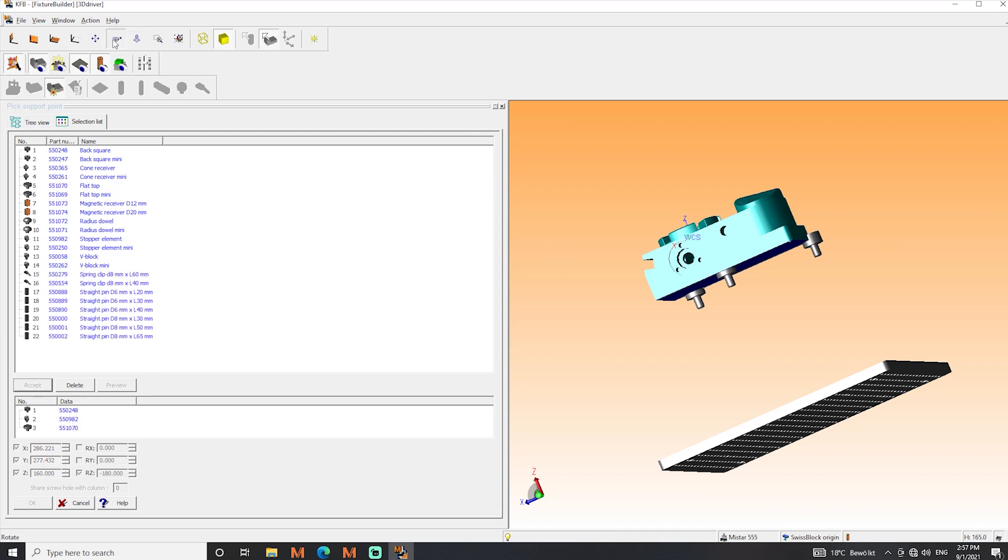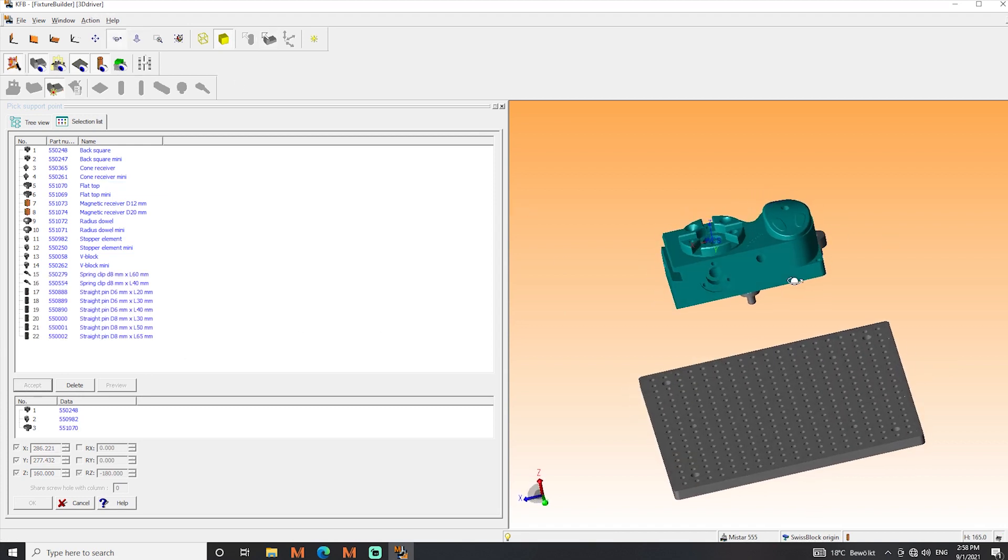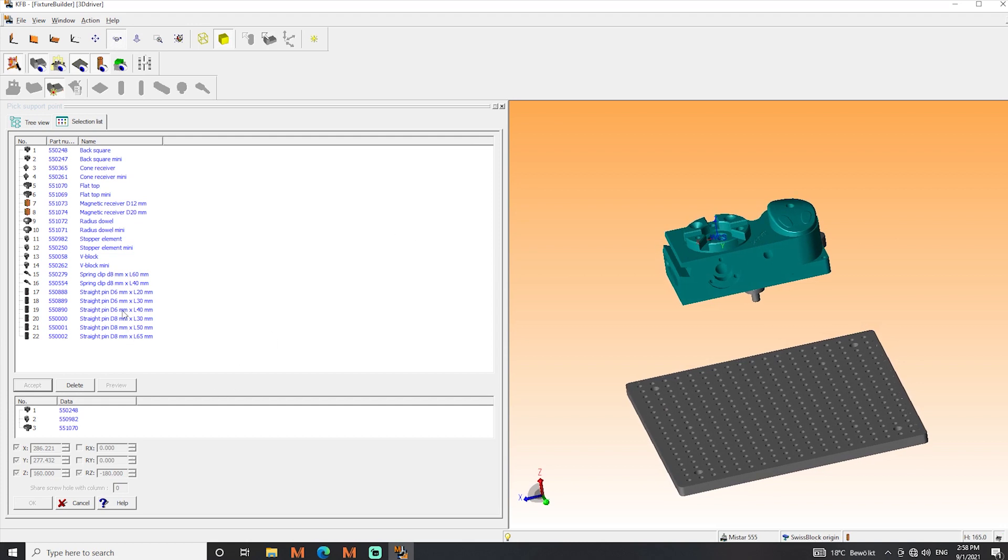Next action is to rotate the workpiece once again so we can look at the top. To fix the part we have to choose a clamping element. In this case a spring clip. We accept the positioning and now we can already process the automatic fixture building.